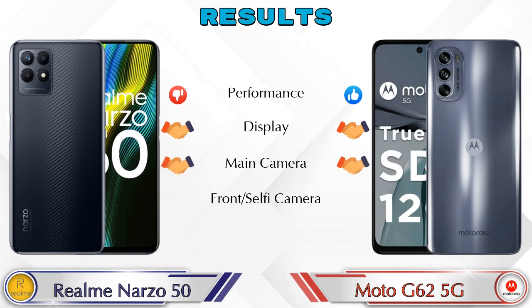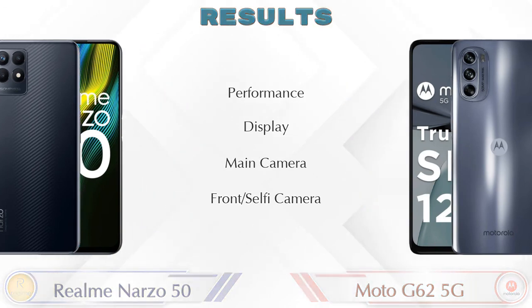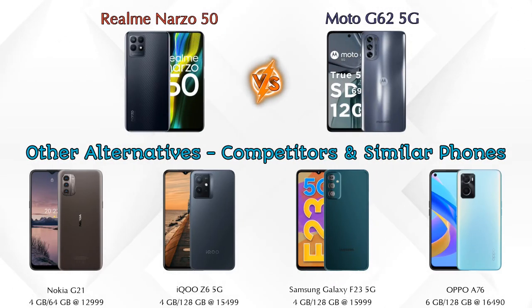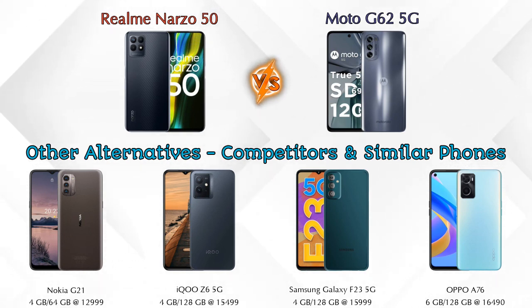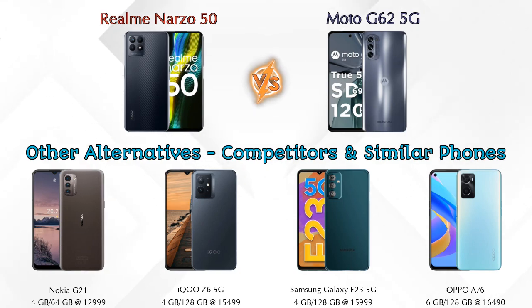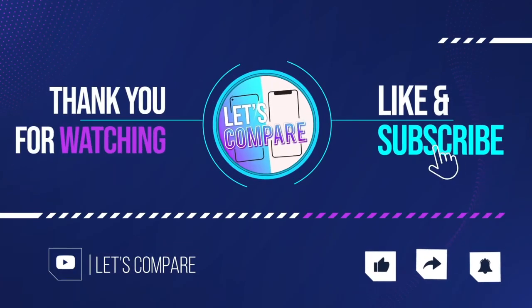For the final verdict: in performance, Moto G62 5G is ahead. In display, both phones are the same. In main camera and front selfie camera, both phones are the same. Other competitors at the same price include Nokia G21, iQOO Z6 5G, Samsung Galaxy F23 5G, and Oppo A76 — details about all competitor phones are available in the description. If you liked our video, please like and subscribe. Thanks for watching.